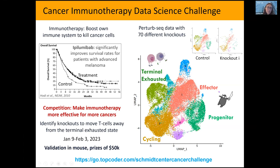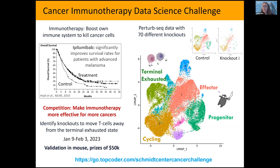In the Eric and Wendy Schmidt Center, we've started to organize large-scale competitions where we invite machine learning researchers. We make these problems accessible to people with no biology background by teaching lectures and short courses before the competition. What is important is coming up with an important biological problem where machine learning researchers actually have a say in what the next experiment to be run will be.